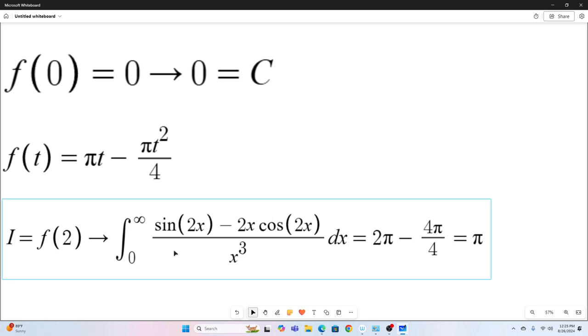So there you go. The integral from zero to infinity of sine two X minus two X times cosine two X over X cubed is equal to pi. All right, guys, hope you enjoyed that. And we'll see you next time.